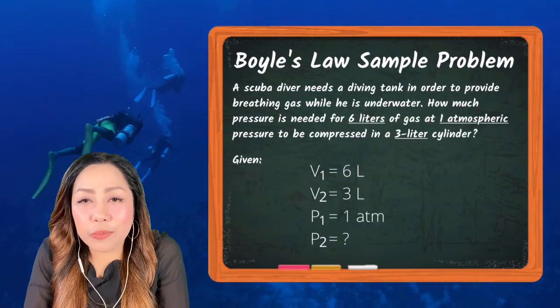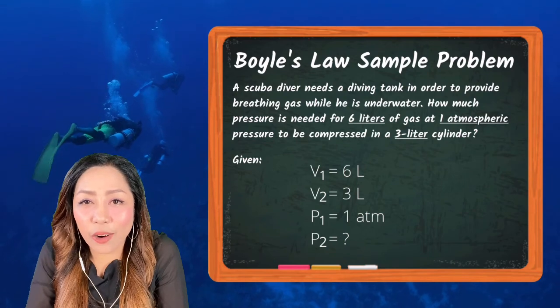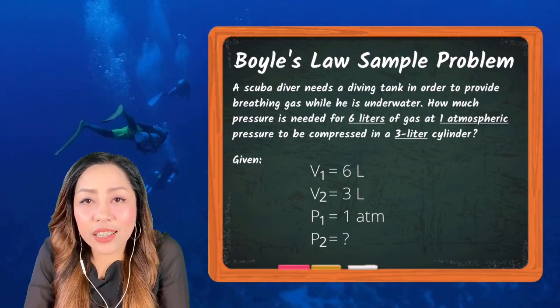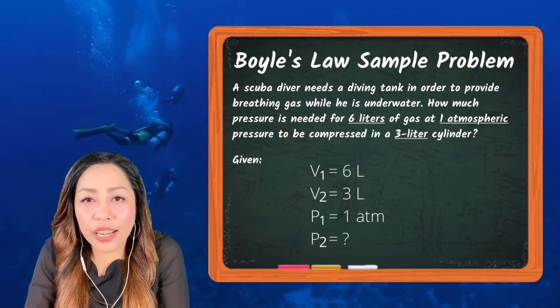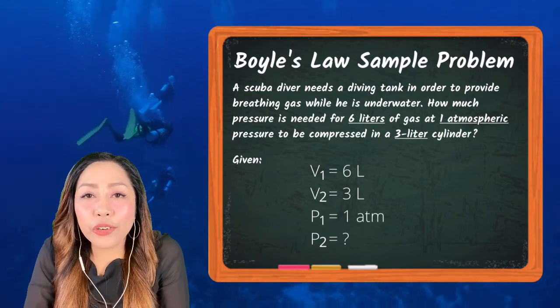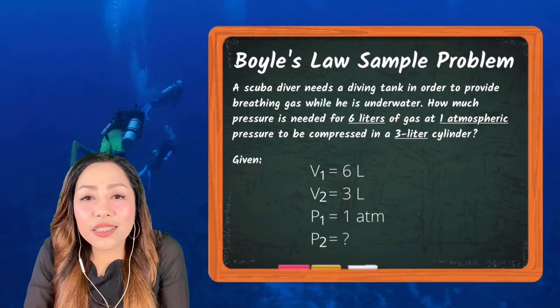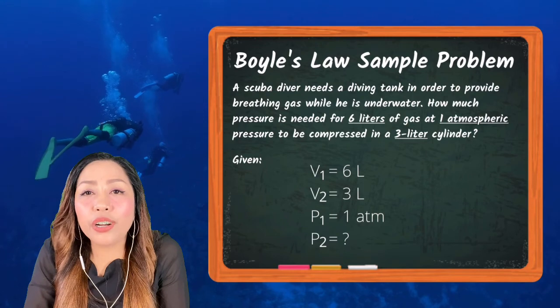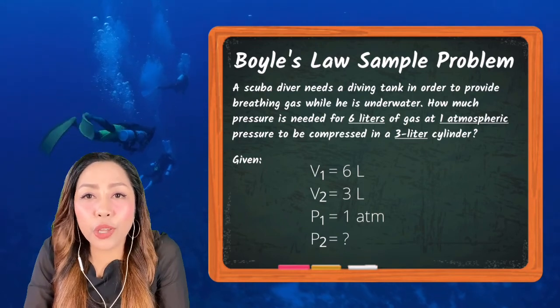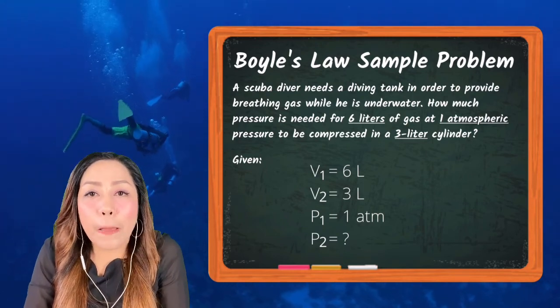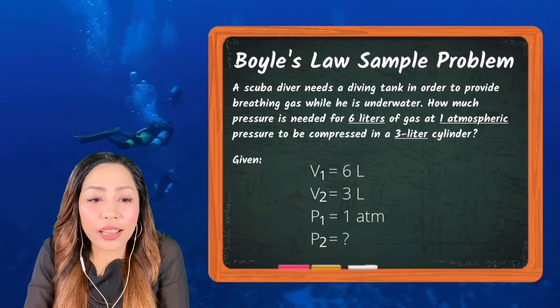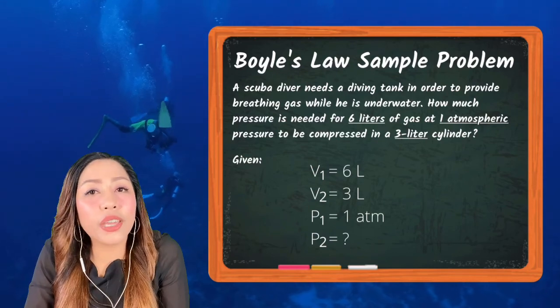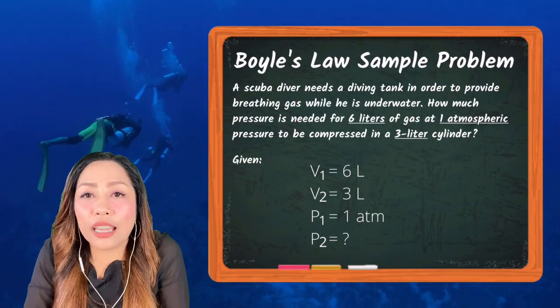Before we solve this problem, let us first identify our given. First we have 6 liters of gas and this is going to be our initial volume, so we will call it V₁. Next is our 1 atmospheric pressure, which is our initial pressure, so we will indicate this as P₁. And lastly, we have 3-liter cylinder which is our final volume, so we will call it V₂.